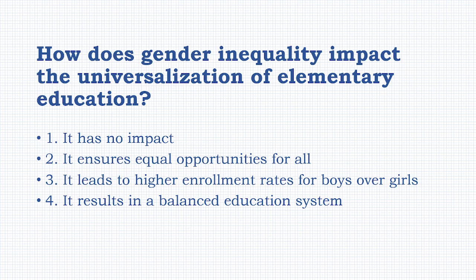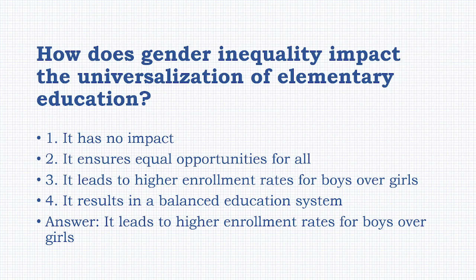How does gender inequality impact the universalization of elementary education? Options: it has no impact, it ensures equal opportunities for all students, it leads to higher enrollment rates for boys over girls, it results in a balanced education system. The answer is: it leads to higher enrollment rates for boys over girls.